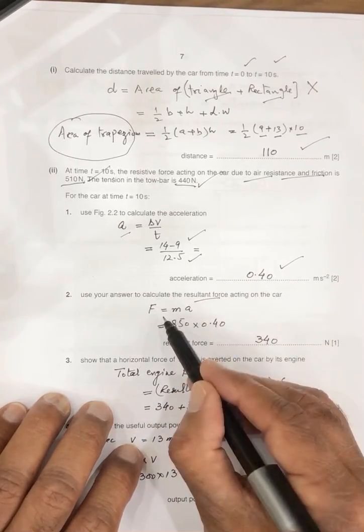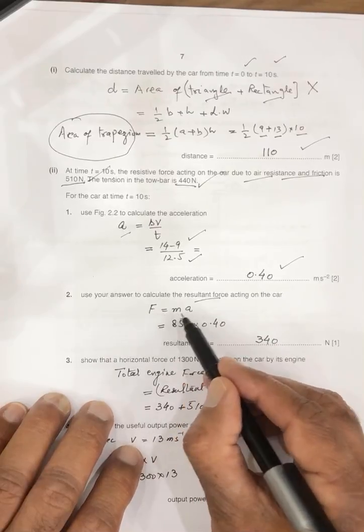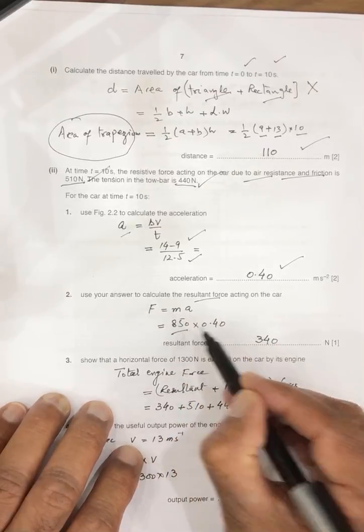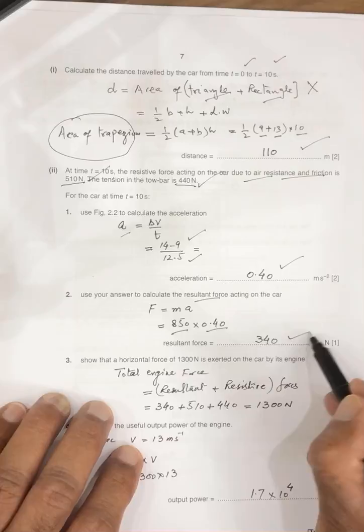And the next, we have to calculate the resultant force. So with the help of acceleration, F is equal to MA, M 850, acceleration calculated, so 340.